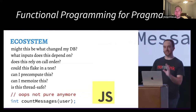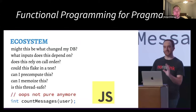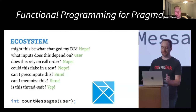One thing I talked about in that talk is how I love having an ecosystem around purely functional programming languages. In JavaScript doing functional style, I have lots of questions about any given function: Could this change my database? What inputs does it depend on? Does it rely on call order? Could it flake in a test? Can I memoize it? Is it thread-safe? And even if a function starts out pure, one changed line of code can make all those useful properties stop being true. By contrast, in Elm — a purely functional language — I always know the answers, because it's all pure functions. That gives incredible peace of mind and saves a lot of time, especially when debugging.